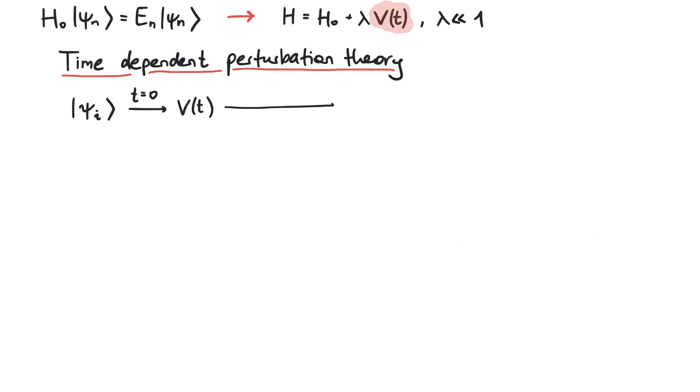What is the probability that after a certain time interval delta t, the system is found to be in another eigenfunction of the Hamiltonian, a certain final state, psi f?